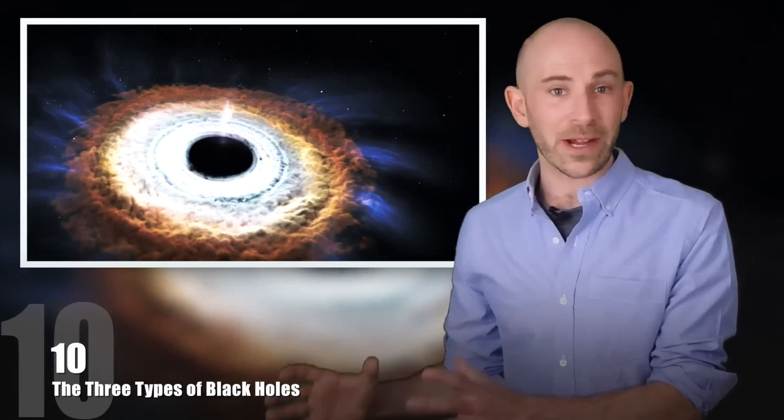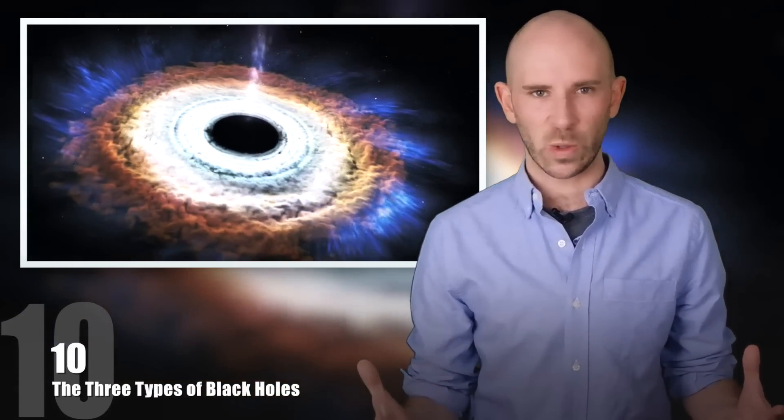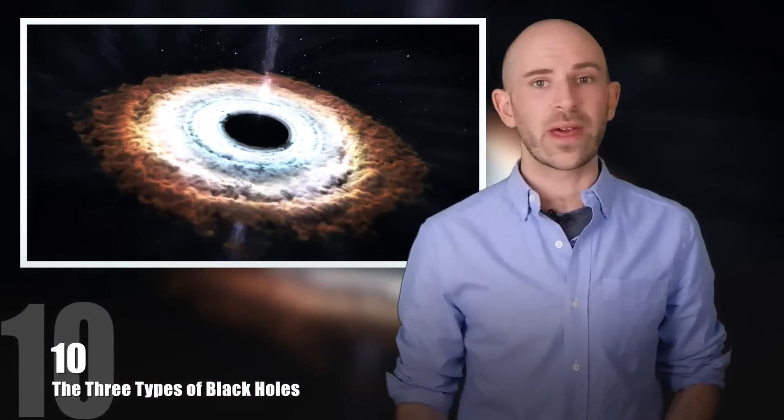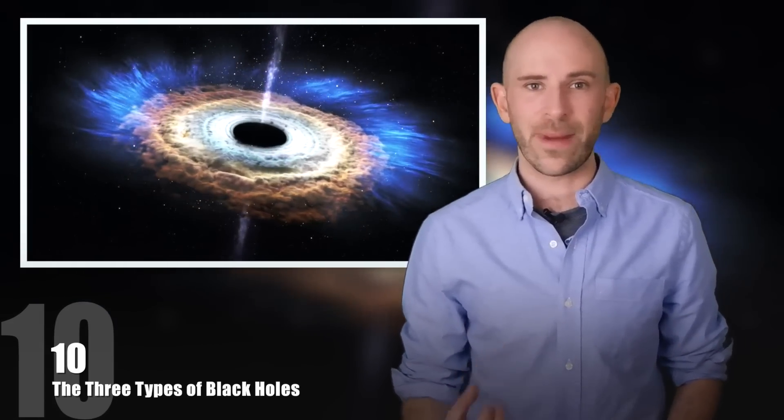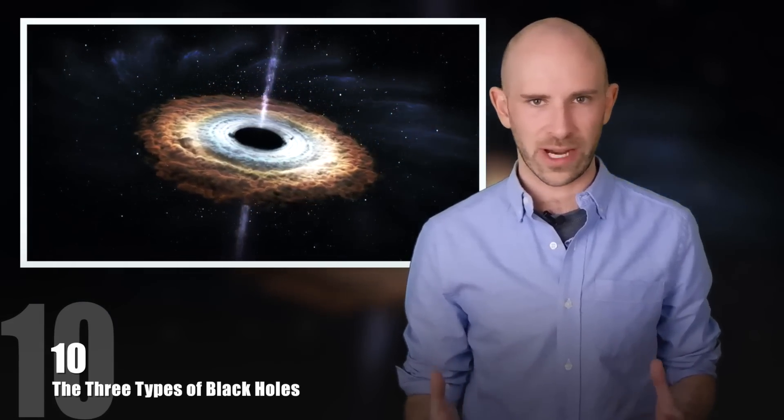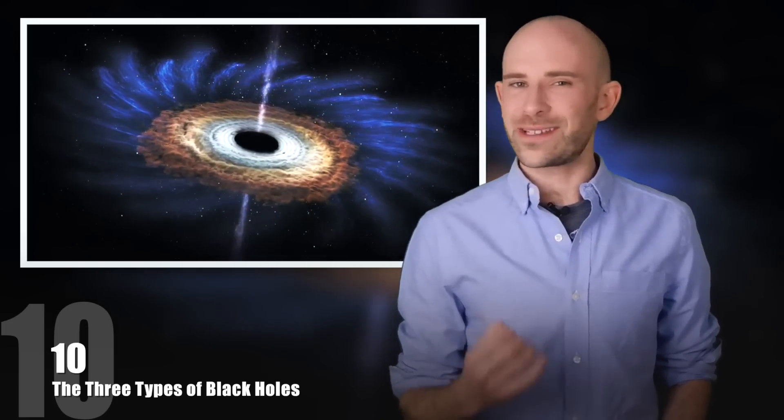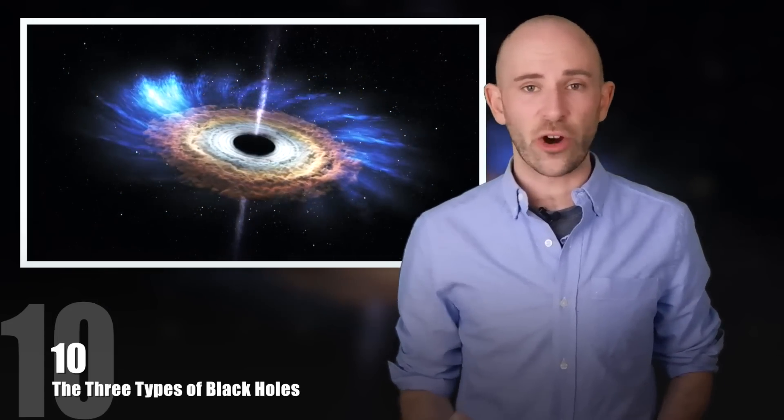Right on the other side of the spectrum are supermassive black holes. Researchers aren't sure how they are spawned, but their radius is about the size of the sun and their masses are billions of times greater than the sun. It is believed that they are at the center of galaxies, including our own.